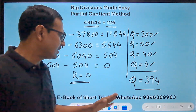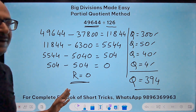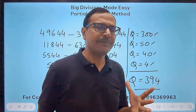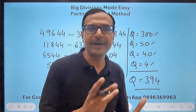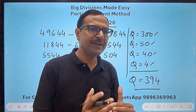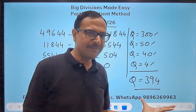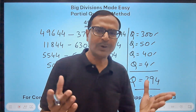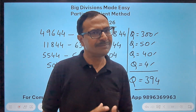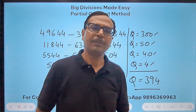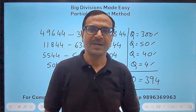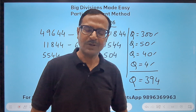So you can see, with the partial quotient method, when you are afraid of big calculations you can do what you already know, one step at a time according to your convenience, then add all the partial quotients to get the final quotient. Work on this method — it's not going to be difficult. 20-30 questions, 2 hours — that's all you need. Share this video with your friends so they can also learn these amazing tricks to make calculations easier.